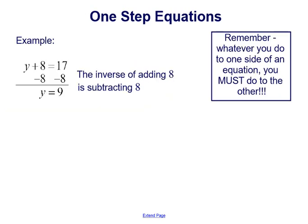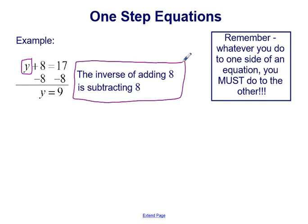So let's use these hints to solve one-step equations. Our first example is y plus 8 equals 17. The goal is to get the variable isolated completely by itself on one side of the equation. Our variable is y, and it's on the left side, but it's not by itself — it's currently being added by 8. So we think: what is the inverse of adding 8? That would be subtracting 8, because that undoes the adding 8, leaving the variable completely by itself on the left side.